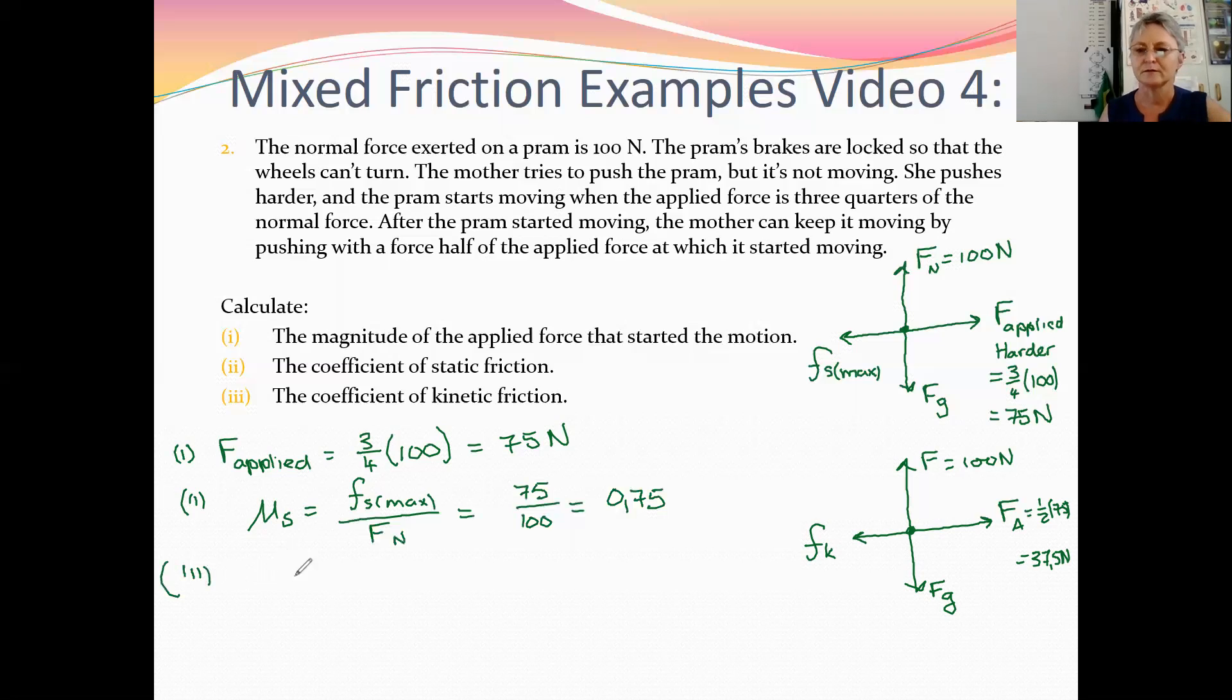And the third question, the coefficient of kinetic friction. The coefficient of kinetic friction would be the ratio between the kinetic friction and the normal force. In this case, the object keeps moving with a constant velocity when half of 75 is applied. So 37.5 would be the kinetic friction as well, because it keeps moving with a constant velocity. And the normal force is 100, so the coefficient of kinetic friction is 0.375.